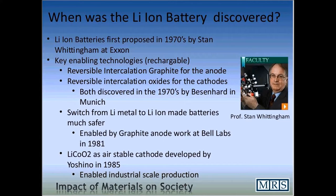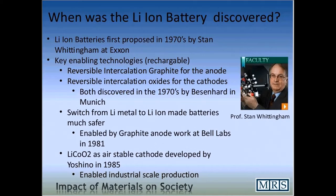The lithium-ion battery was first proposed back in the 1970s by Stan Whittingham. However, it was not really enabled until the 1980s. The first key development was the concept of reversible intercalation graphite for the anode, meaning you could stuff the anode with lithium in interstitial positions and then remove it. That was a very important invention from the anode side. The other side is the cathode, and you have to have both to make a battery work. In this case, a reversible intercalation oxide for the cathode was also discovered in the 1970s.